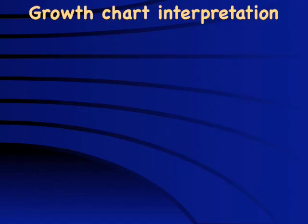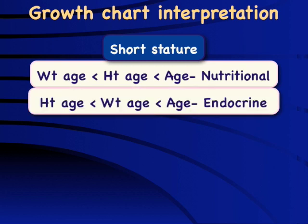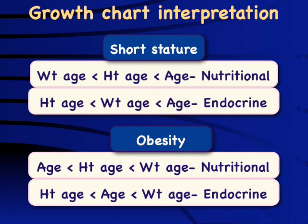To summarize the overall interpretation of growth charts: it is absolutely important to focus on weight age in a short child. Those with a predominant effect on weight age are likely to have nutritional causes, while if height age is equally or more affected, it is an endocrine cause. For obese children, if height age is more than chronological age, it suggests physiological causes; if less than chronological age, we must consider endocrine or pathological causes. The key message is that proper growth chart interpretation allows much better clinical evaluation of a child with growth failure or growth excess, and restricts unnecessary investigations.